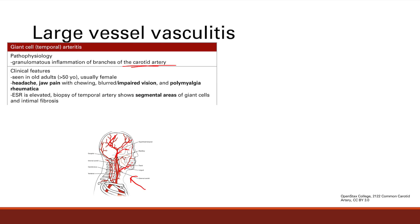Polymyalgia rheumatica is not a symptom of the vasculitis, but they're often associated. Polymyalgia rheumatica means proximal muscle stiffness and some weakness. This is an inflammatory disease, so ESR is elevated. If you do a biopsy of the temporal artery, you'll see segmental areas of giant cells and intimal fibrosis — that's where the name giant cell arteritis comes from.